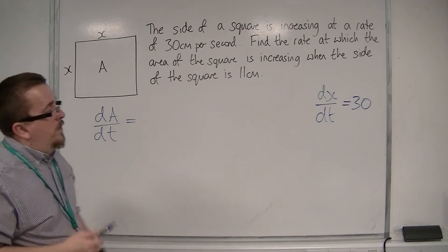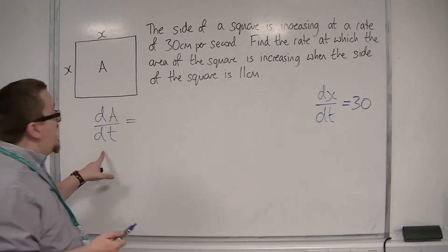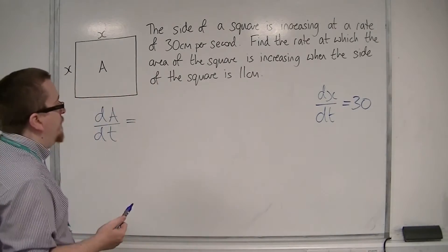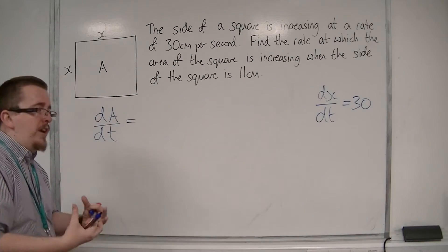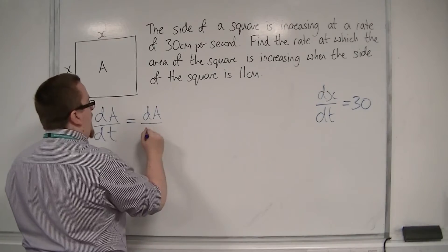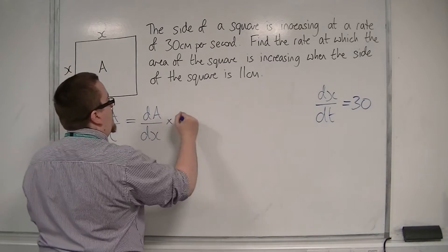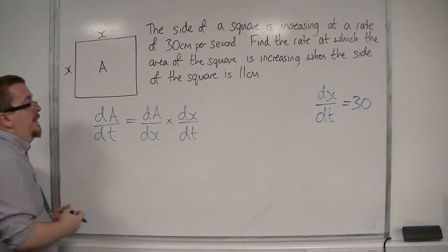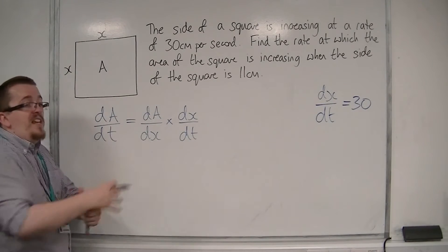So we now know that we have a dA by dt and a dx by dt. So in order to use the chain rule, we must have dA by dx and a dx by dt. And we know what the dx by dt is, so we need to find this dA by dx.